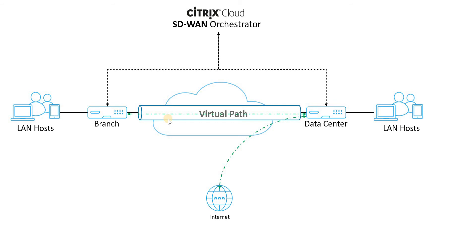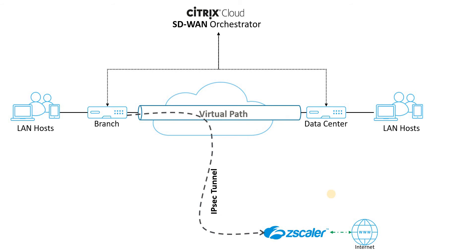Traditionally, internet traffic from the branch offices will be backhauled towards the data center for security scanning, and the internet will be served from there. This will introduce latency and hence will result in a bad user experience.